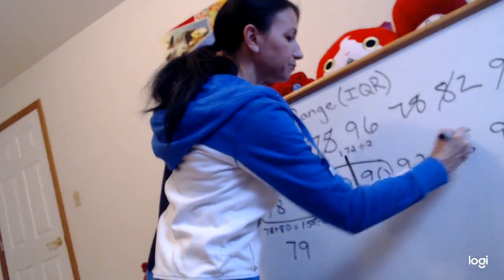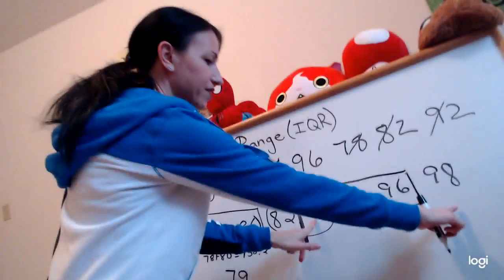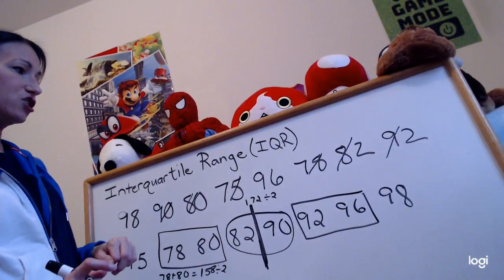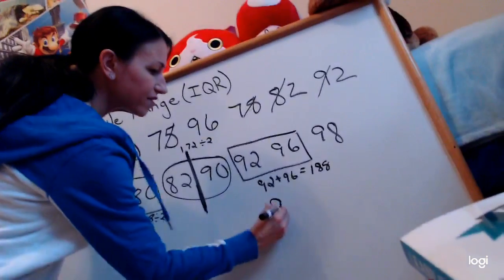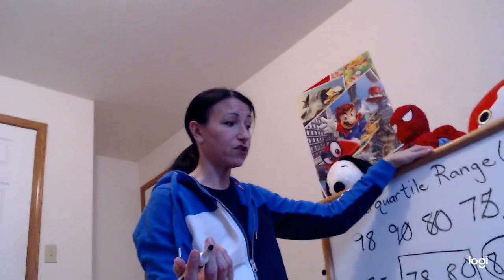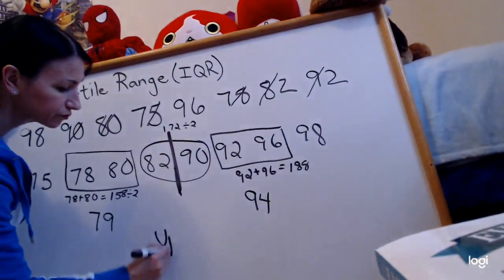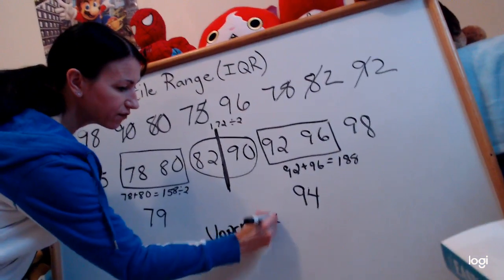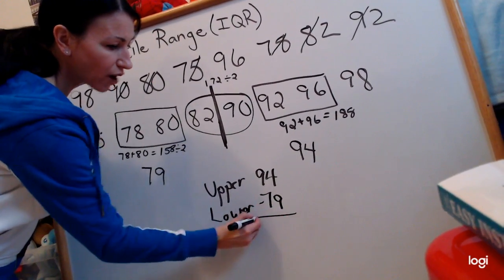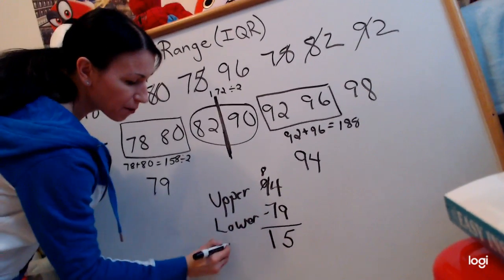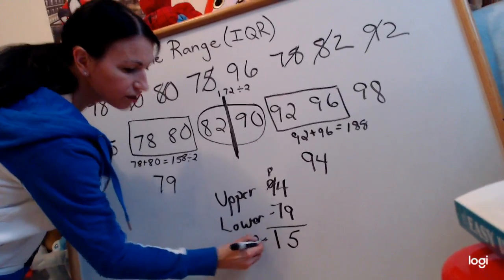For the upper quartile, I have two numbers in the middle again: 92 and 96. Add them together and divide by two — 188 divided by two is 94. Now just one more step: take the range of those two answers. Upper 94 minus lower 79 — my interquartile range is 15.